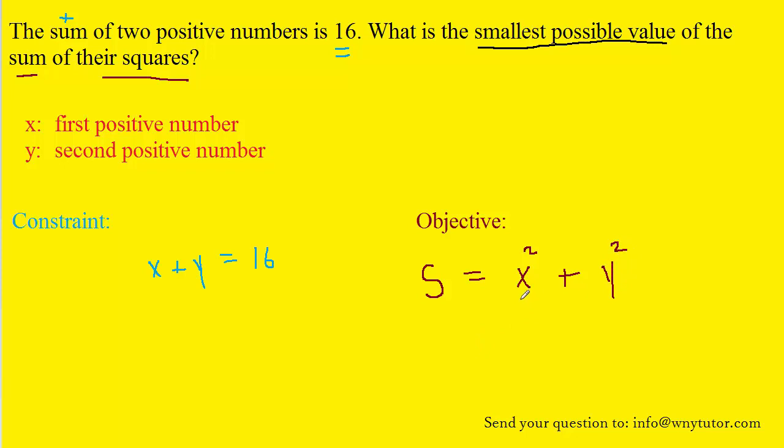We'll notice that the objective equation is in terms of two variables, x and y. We need to express this objective equation in terms of just a single variable, and that's where the constraint equation comes in. It's traditional to solve the constraint equation for y by subtracting x from both sides. We can see that y is equal to 16 minus x. We'll take that expression for y and plug it into the objective equation. Now we have the objective equation in terms of a single variable, x.